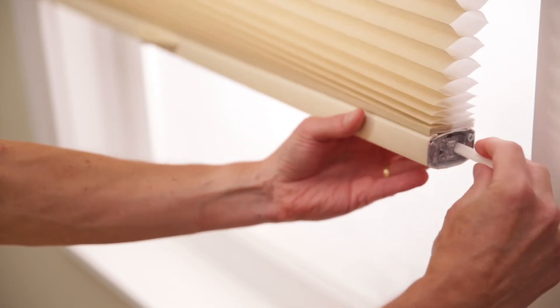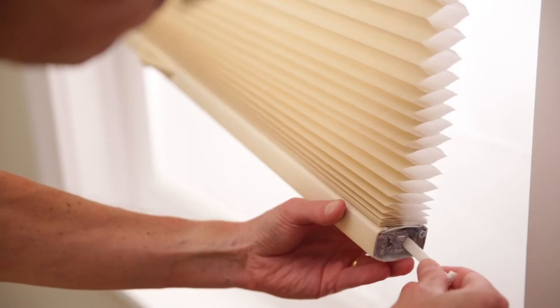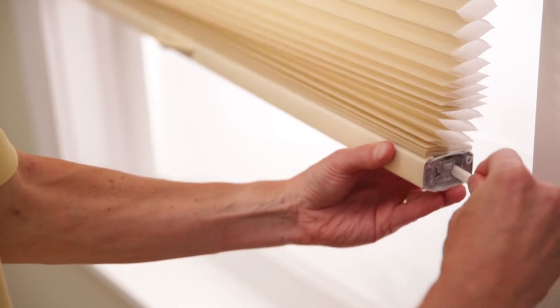Turning the dial clockwise will lower the bottom rail. Turning it counterclockwise will raise the bottom rail.